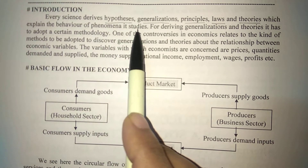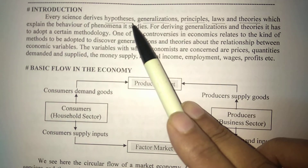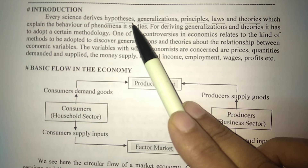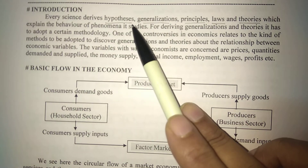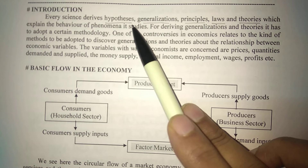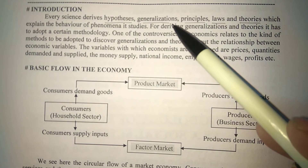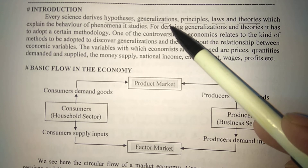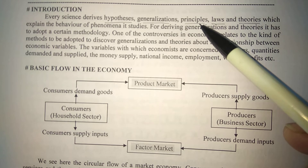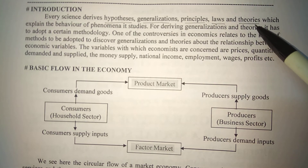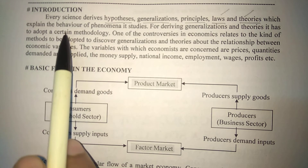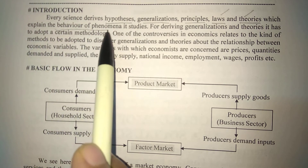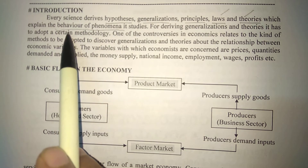In any science, hypotheses are formed. A hypothesis is developed from imagination or market experience — a concept is developed, then checked whether it is applicable everywhere or not. Based on that, principles, laws and theories are formed. The work of laws and theories is to observe the behavior of whatever we are studying.